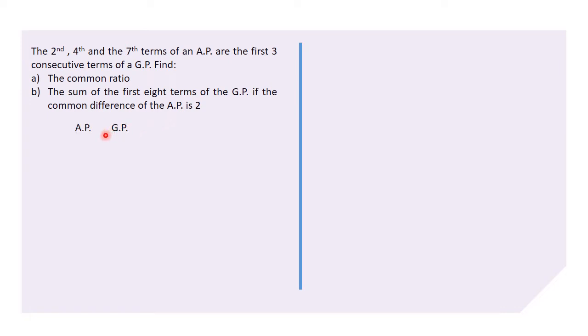Now, the AP and the GP written side by side: we have a + d, which is the second term for the AP, that equals a, which is the first term for the GP. Again, a + 3d is the fourth term for the AP, and that is equal to the second term for the GP. And lastly, we have a + 6d, which is the seventh term for the AP, equal to the third term for the GP.